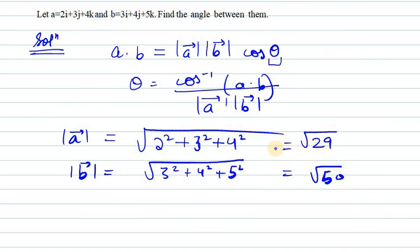Putting the value in above equation, we will get cos inverse a dot b. We need to find a dot b as well, so 2 into 3 plus 3 into 4 plus 4 into 5.